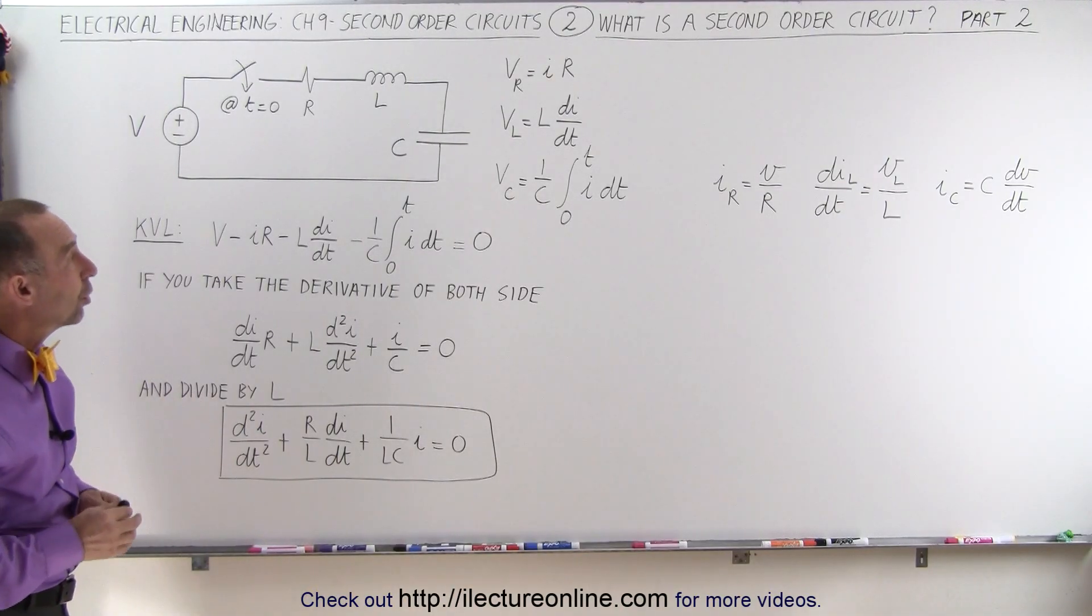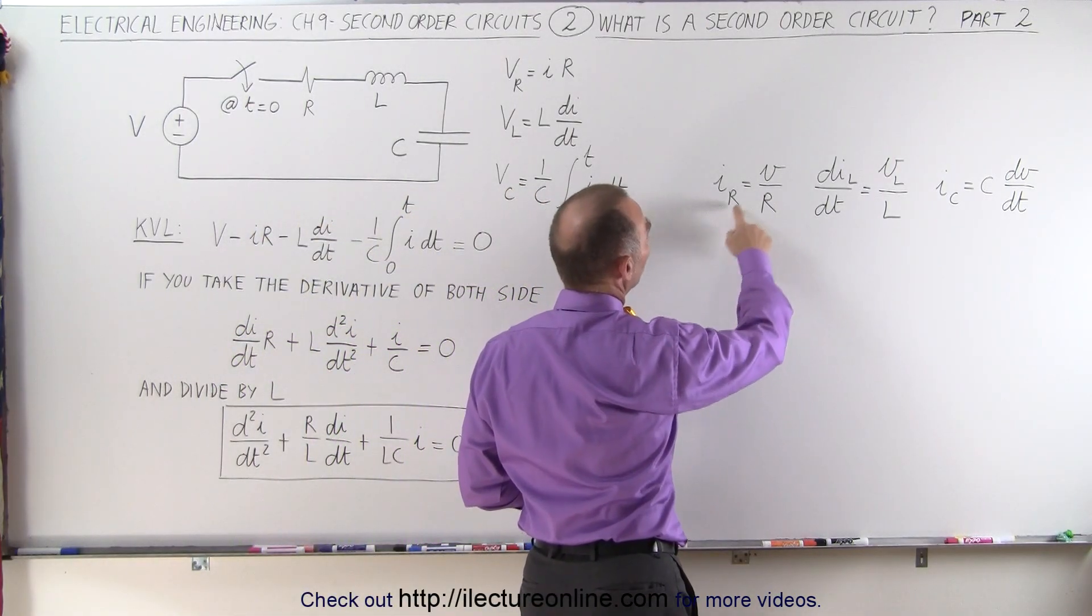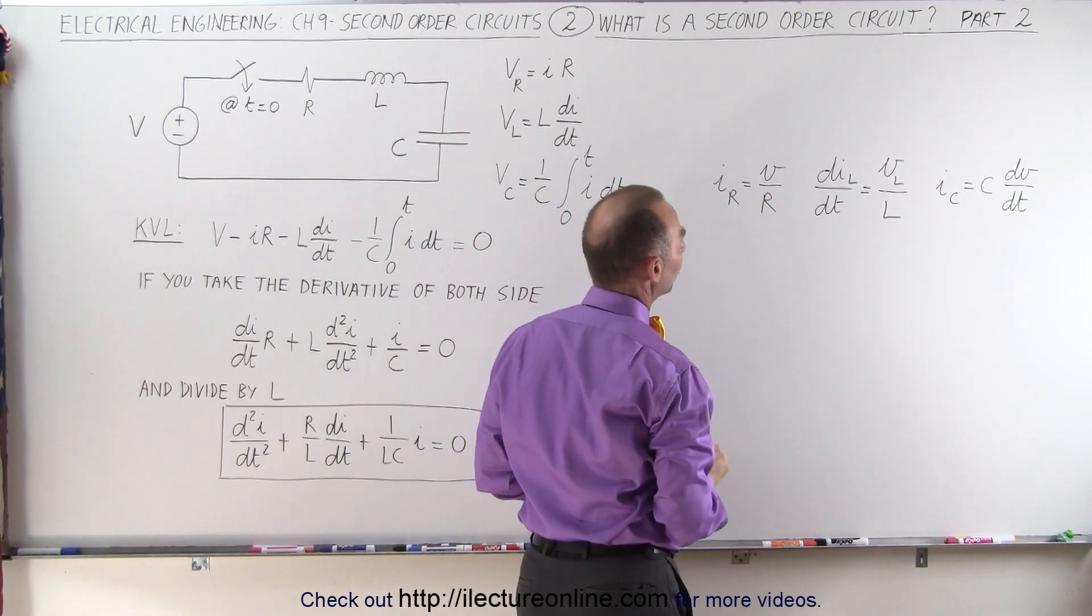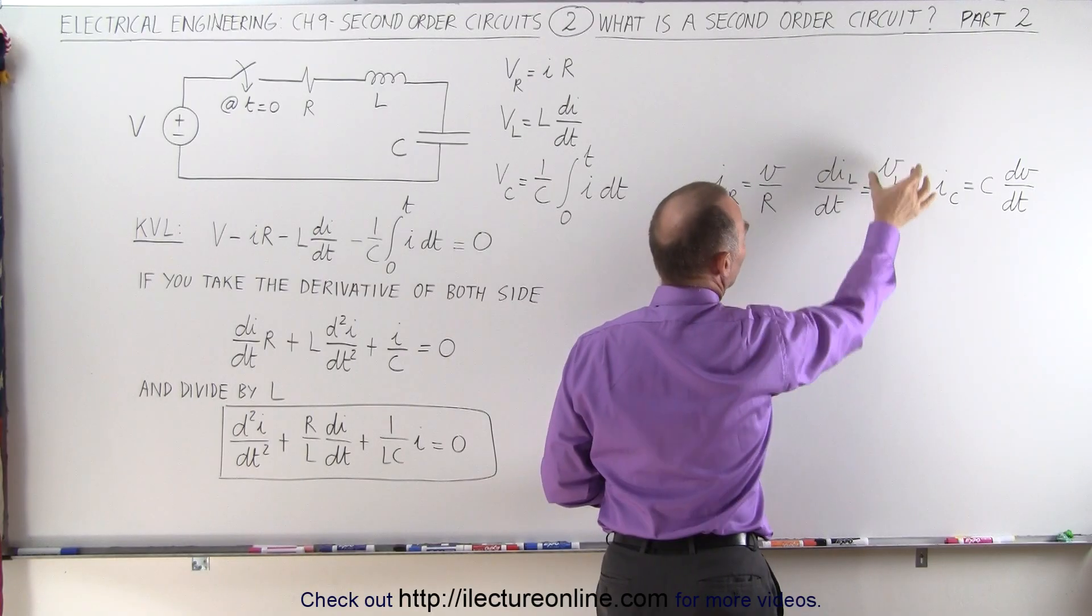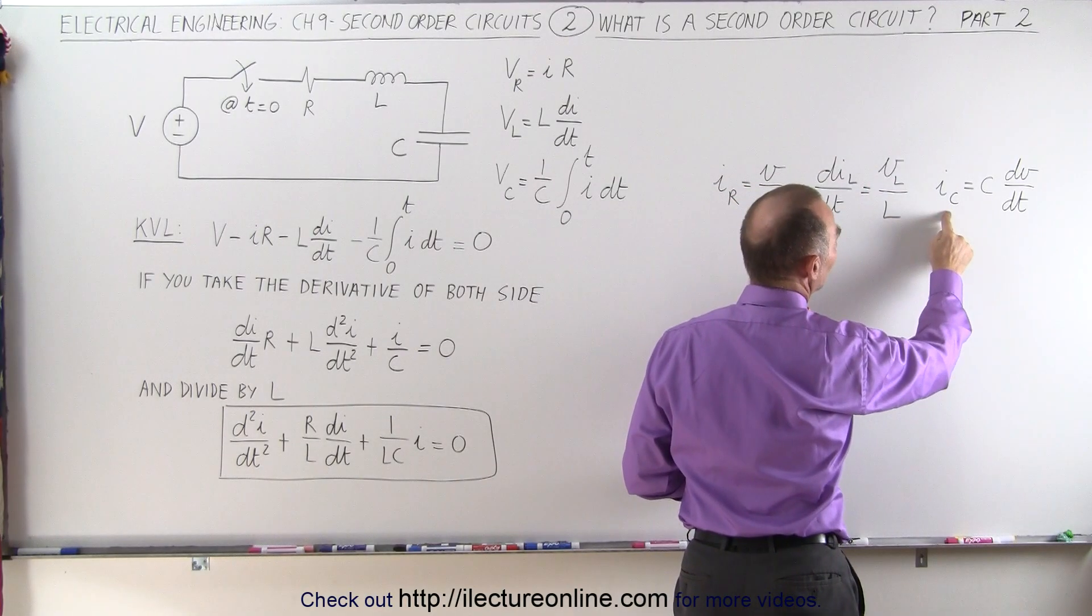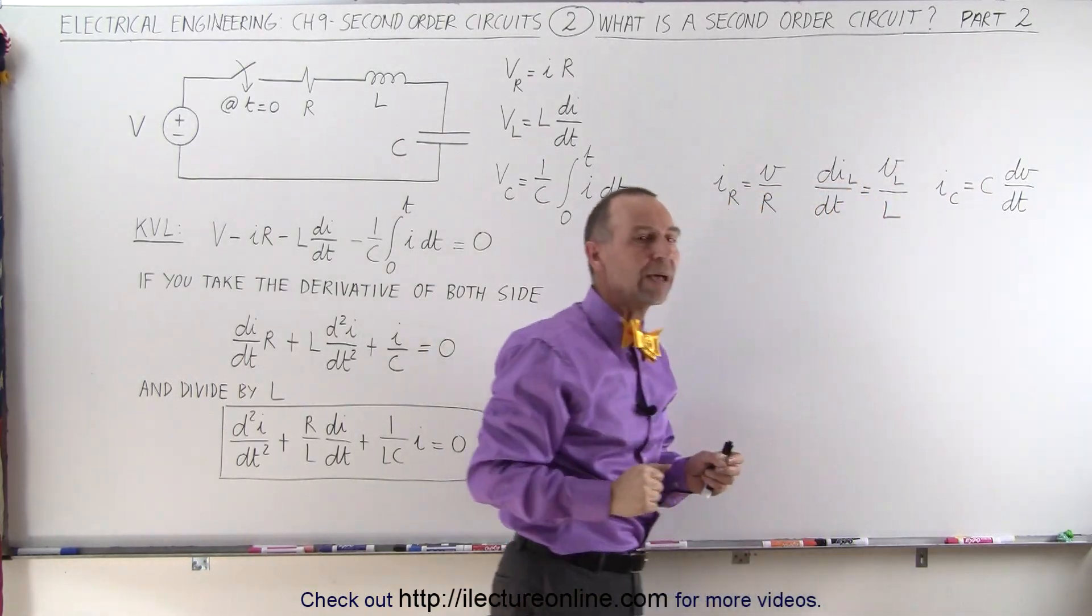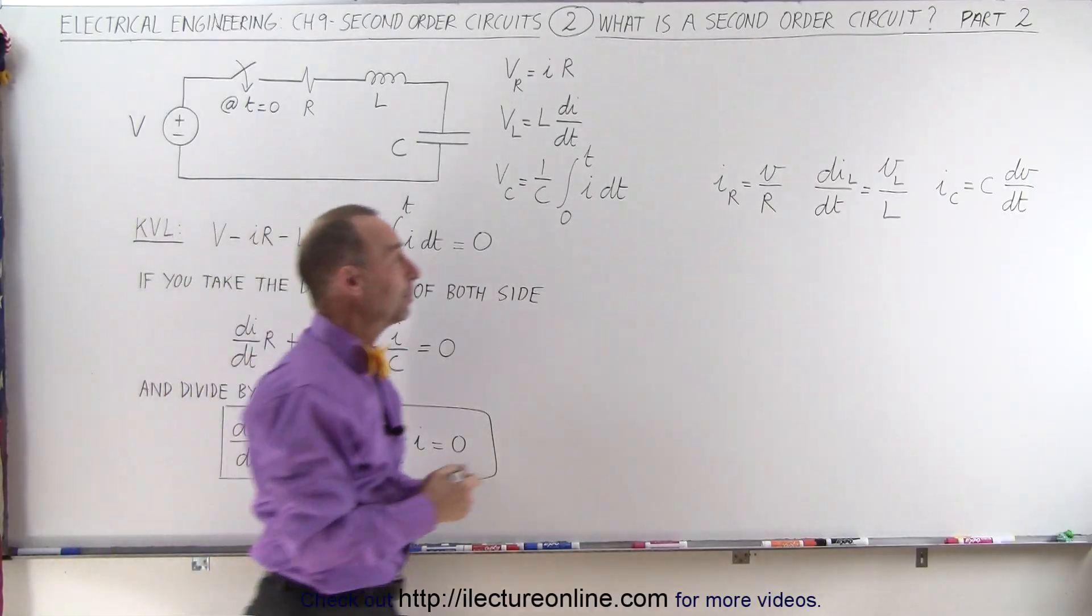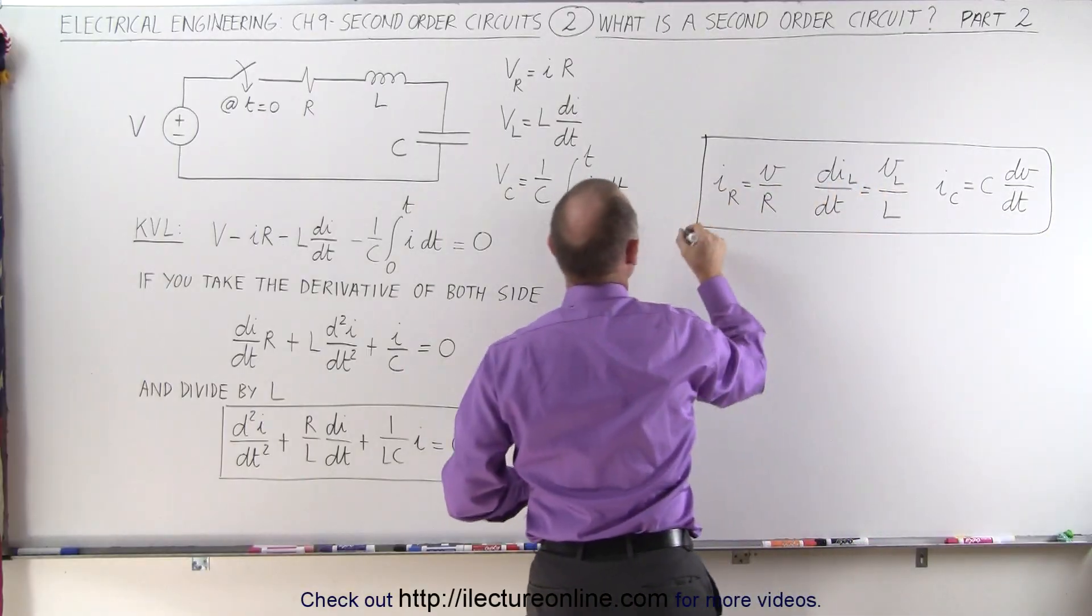Some other interesting things to note is that the current through the resistor, according to Ohm's law, will be the instantaneous voltage across the resistor divided by the resistance. The current change through the inductor can be found by taking the voltage across the inductor divided by the inductance. And the current leading to the capacitor is equal to the capacitance times the rate of change of the voltage across the capacitor with respect to time. These are all good things to remember.